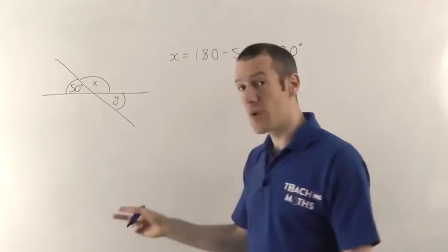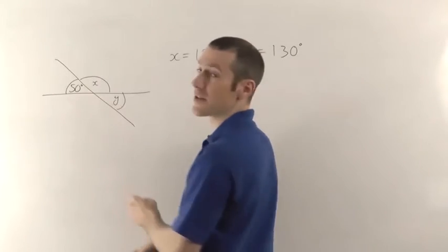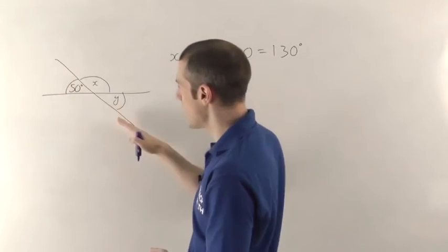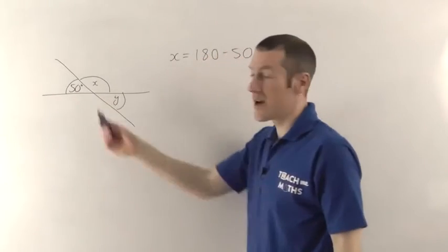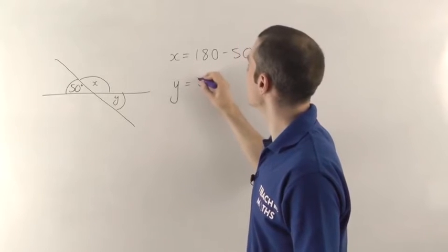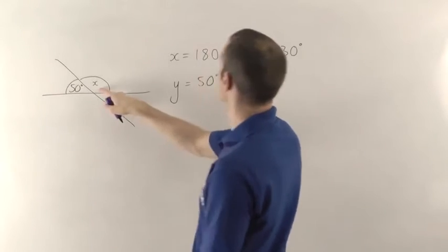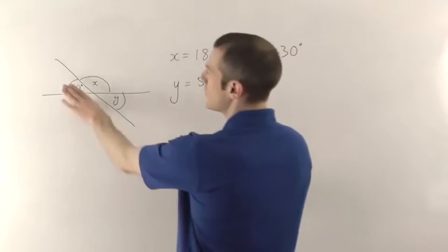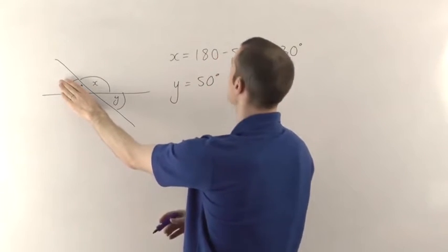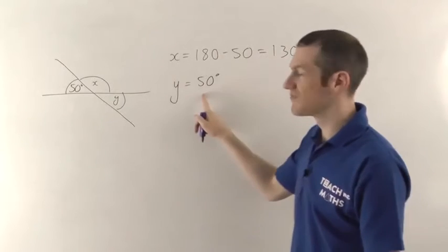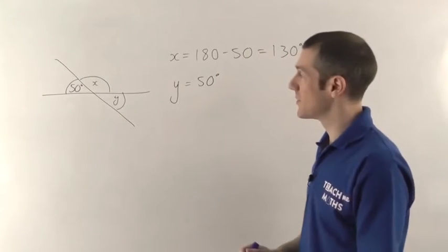Now Y — there are two ways you can look at Y. Probably the easiest: it's opposite the 50. You've got one straight line there and another straight line here crossing, so you've got vertically opposite angles, which means Y must be the same as 50, so Y is 50 degrees. The other way is knowing X is 130, so 180 minus 130 gives you 50. But spotting that it's opposite the 50 is the easiest way.